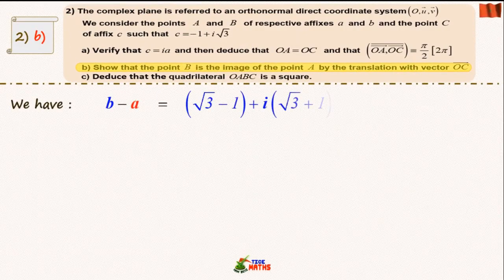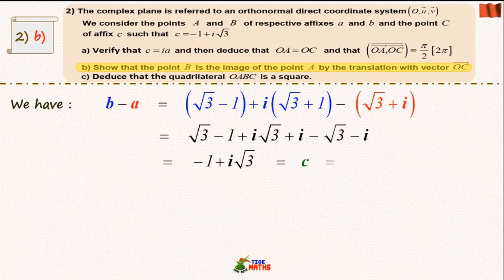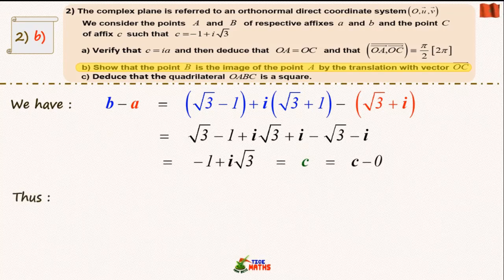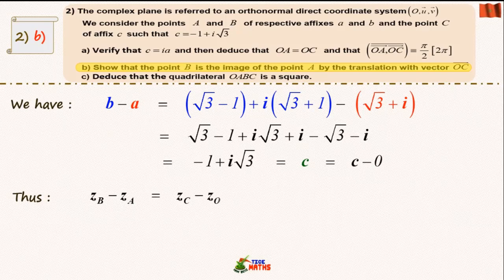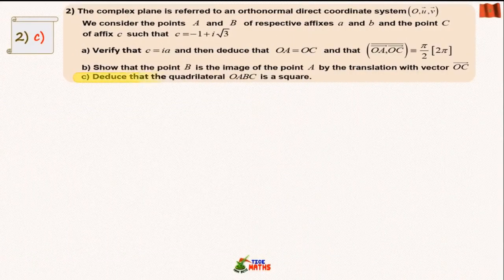To solve question 2b, we need to show that vector AB equals vector OC. This vectorial equality passes through the equality of their affixes zb - za and zc - zo, so the point B is the image of the point A by the translation with vector OC.